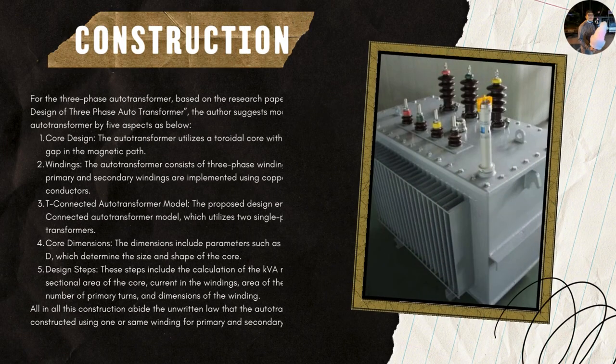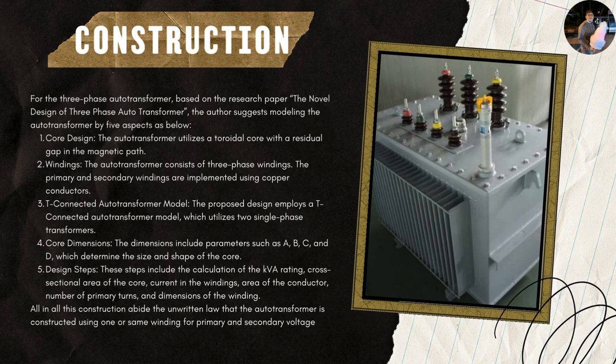For the construction of the auto transformer, specifically the three-phase auto transformer, the author of a research paper on novel design of three-phase auto transformers suggests modeling it by five aspects. First, the core design: the auto transformer utilizes a toroidal core with a residual gap in the magnetic path. The core design aims to reduce inrush current and improve cooling, and it also incorporates UI elimination for enhanced performance and cost reduction.